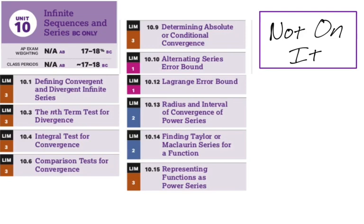Absolute versus conditional convergence, not going to be on it. There won't be any error. So no alternating series, no Lagrange error bound. They're not going to be on it. Radius and interval of convergence, out. Finding Taylor and McLaurin series for a function, out. So that's series,